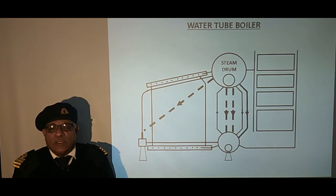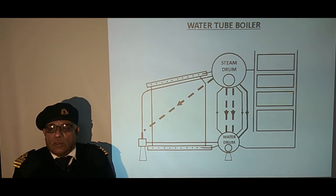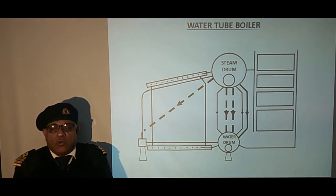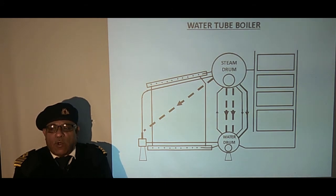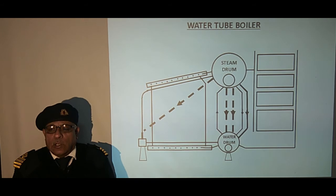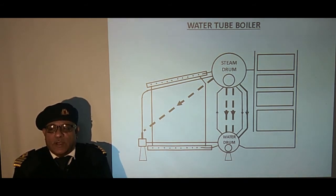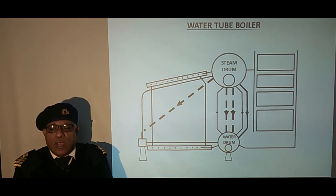The next component is the water drum. The water drum receives water from the steam drum through downcomers and distributes the water to screen and generating tubes, and in some cases to the water wall headers through flow tubes. It also provides the space for accumulation of suspended solids precipitated from the boiler water and enables them to be blown out as required.